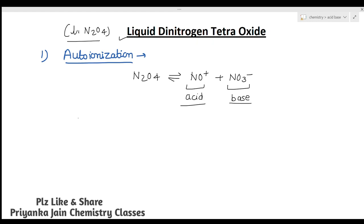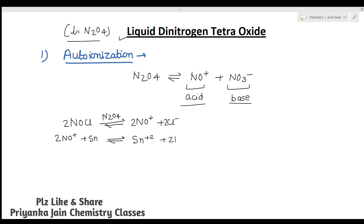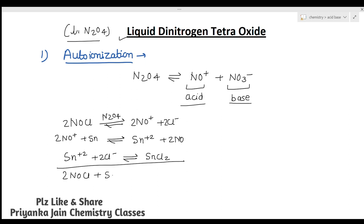Suppose we are taking NOCl in liquid N2O4. It will give 2NO⁺ plus 2Cl⁻. Now 2NO⁺ can react with Sn — these reactions are reversible — forming Sn²⁺ plus 2NO. Then Sn²⁺ plus 2Cl⁻ react together forming SnCl2. So the whole net reaction is: 2NOCl + Sn → 2NO + SnCl2. From this reaction you can conclude that NOCl is acting as the acid in liquid N2O4.